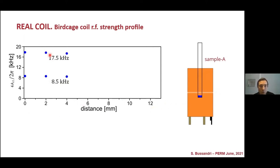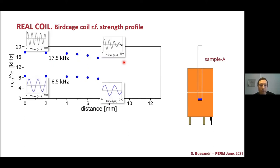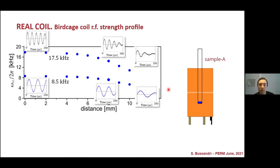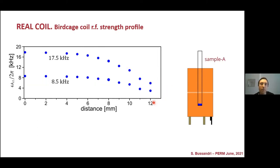These blue dots right here represent the RF intensities extracted from these nutation signals. And what we did was start moving the tube inside the coil for different distances from the center of the coil. And at each point, we perform a nutation experiment for these two RF powers. You can see that when we go farther from the center of the coil, the nutation signals start to decay.